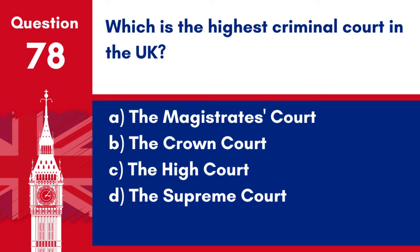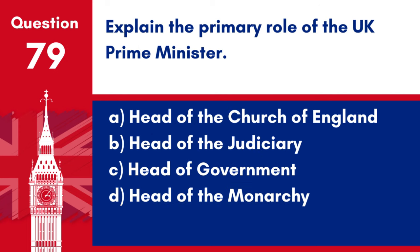Question 78. Which is the highest criminal court in the UK? a. The Magistrates' Court. b. The Crown Court. c. The High Court. d. The Supreme Court. Answer: d. The Supreme Court. The Supreme Court is the highest court in the UK for criminal and civil cases, serving as the final court of appeal.